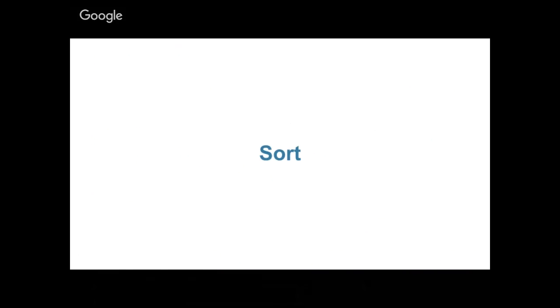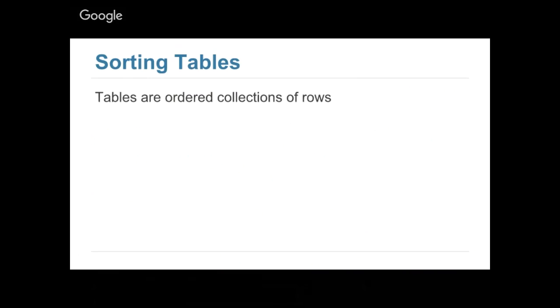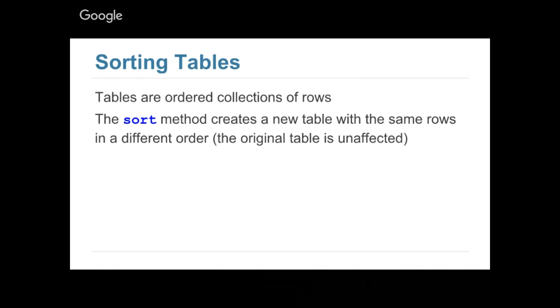Let's talk about sorting. We're going to be talking about a different way to view tables, which is considering tables as an ordered collection of rows. We discussed how tables can be considered as multiple columns. Another way to slice a table is to slice it by rows. We have a bunch of rows in the table, and what we can do is use the sort method to create a new table with the same rows in a different order. I'm also using the show method in my demos — it will just allow me to display the first couple rows of a table, which will be convenient when our tables get too long.